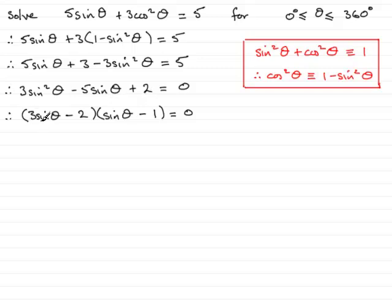What we could do now is put each of these factors equal to 0. So in other words, 3 sine theta minus 2 equals 0, or we have sine theta minus 1 that equals 0. Rearranging this equation by adding 2 to both sides and dividing by 3 will give sine theta equals 2 thirds. Or if we take this equation by adding 1 to both sides, we get sine theta equals 1.